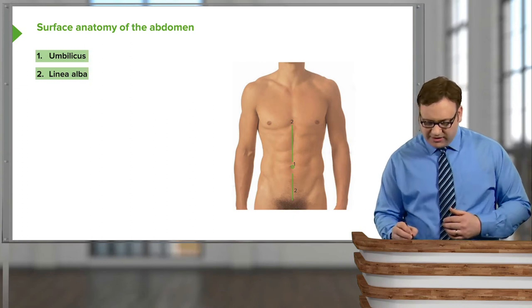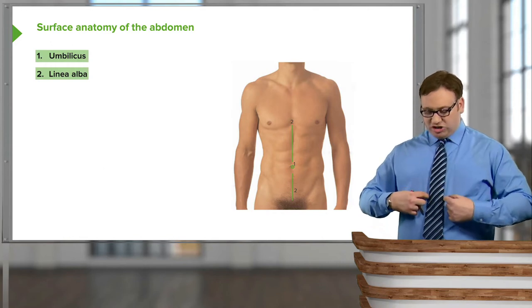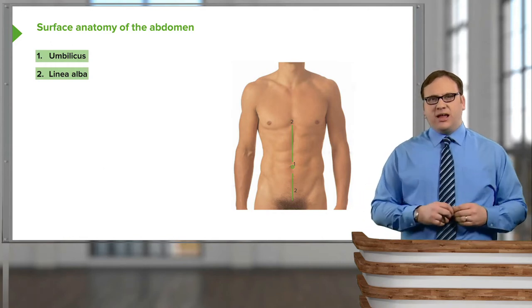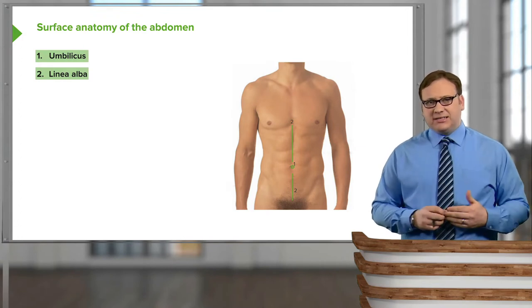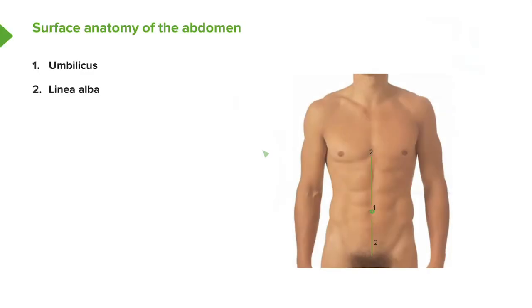Either side of the linea alba, we have a series of muscles radiating inferiorly — running like strap-like muscles either side of the midline. These are our six-packs. Some people may be able to see them depending on how much subcutaneous fat is under the skin. You can see that either side of the midline, we have these indentations that give this region its characteristic six-pack appearance. Lateral to these muscles, we can see this line running down separating the six-pack from the more lateral musculature.